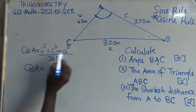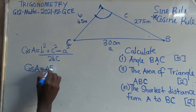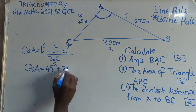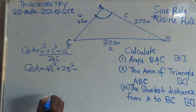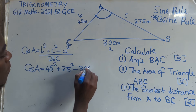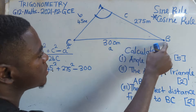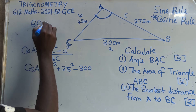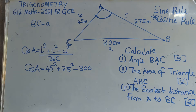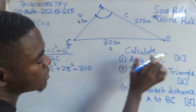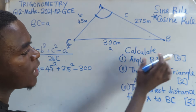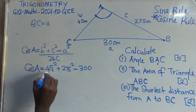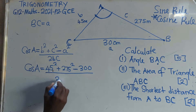Where is B? B is 45. So just say 45 squared plus C — C is 275 — 275 squared, minus where is A? A is 300. So this small letter A is just the same as capital letter B, C. B times C is just the same as small letter A. So you say over 2 times C. Where is our B? B is 45. So 45 times C is 275.